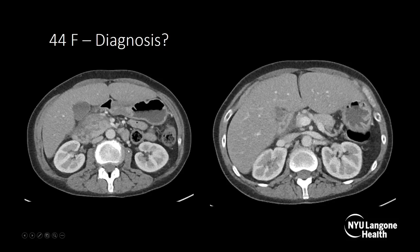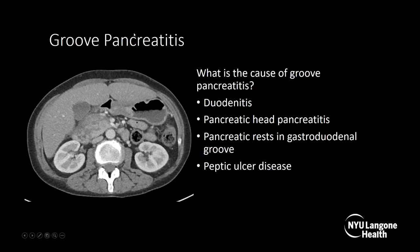This is a 44-year-old female with an axial CT with IV and neutral oral contrast. The body of the pancreas enhances completely and looks normal size with no peripancreatic fat stranding or fluid. But in the head, there's heterogeneity and some edema — it's a little bit enlarged — with fluid extending into the pancreaticoduodenal groove and fat stranding. This is an example of groove pancreatitis.